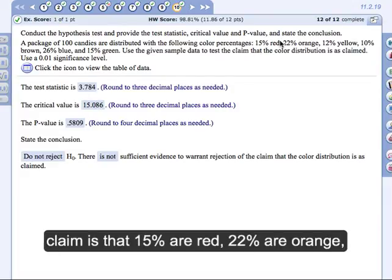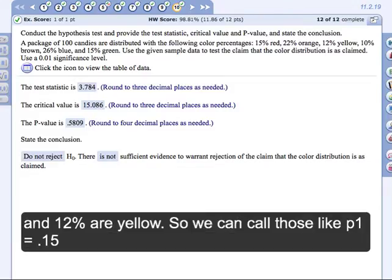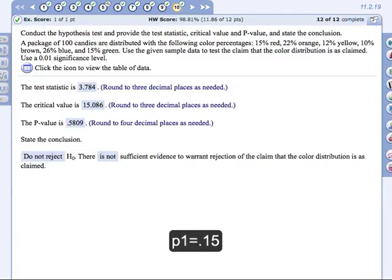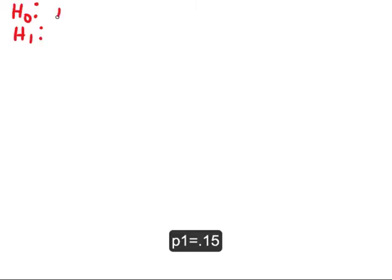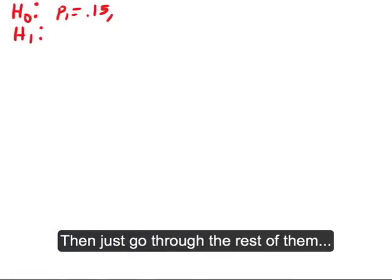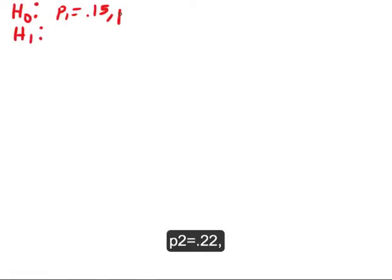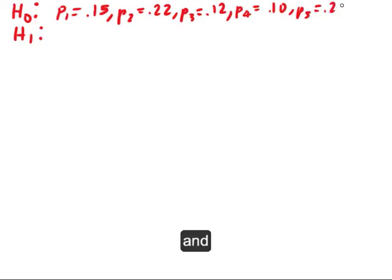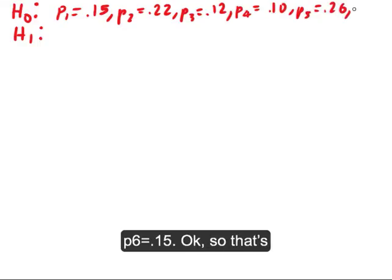So we've got the first claim is that 15% are red, 22% are orange, and 12% are yellow. So we can call those like P1 is 0.15, P1 standing for red. So I'm just going to write that out. P1 is 0.15. There's our first claim. And then just go through the rest of them: P2 is 0.22, P3 is 0.12, P4 is 0.10, P5 is 0.26, and P6 is 0.15.